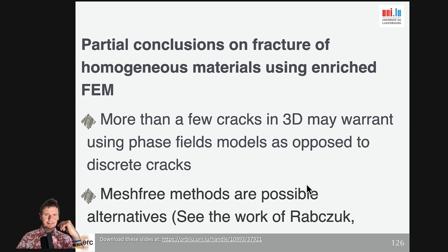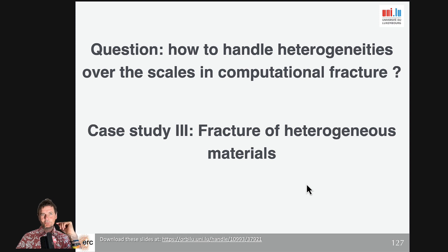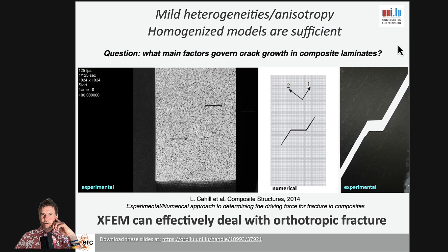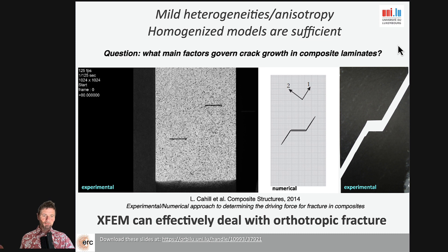Mesh repository is also possible and we can work with the work of Timon Rabczuk. The next question is what happens if we have heterogeneous materials. There will be different types of heterogeneities, and in forthcoming lectures I will be talking about multi-scale fractures. For now, I would like to talk about mild heterogeneities — for example, the case of anisotropic fracture. It can be the case that some materials are anisotropic.